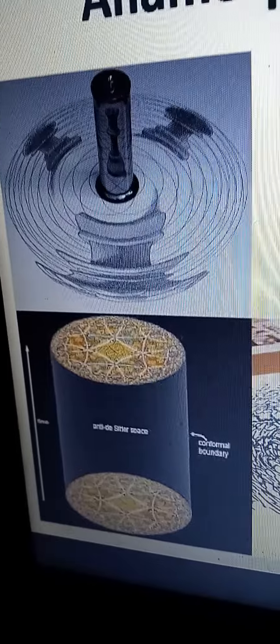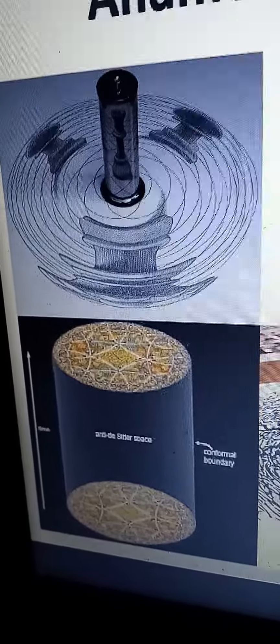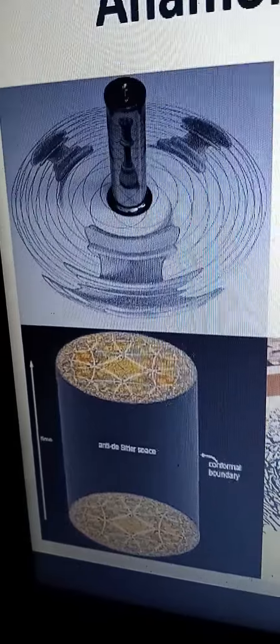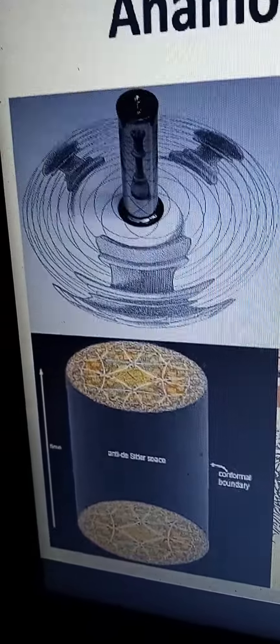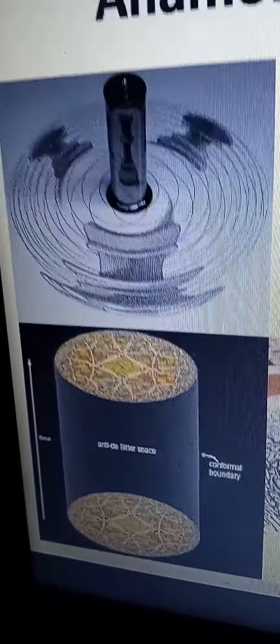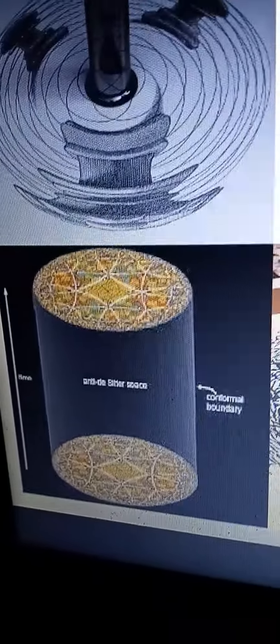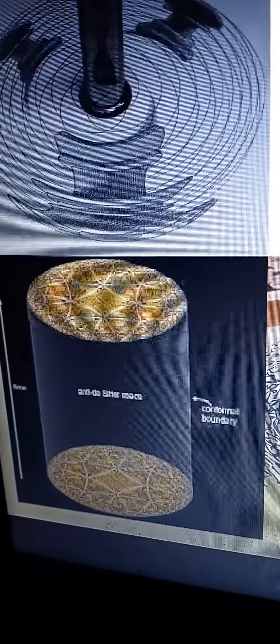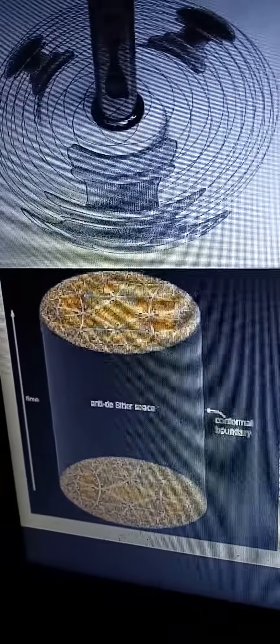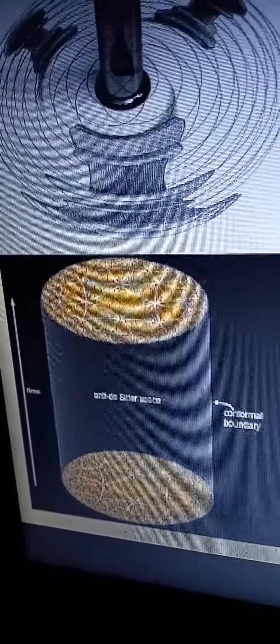The top image is an anamorphic image. It takes what is essentially a hyperbolic geometry and uses a mirror cylinder to correct it. The mirror cylinder in the bottom picture is what I consider to be the conformal boundary of the hyperbolic geometry. They go hand in hand.